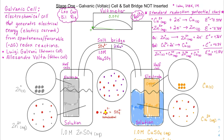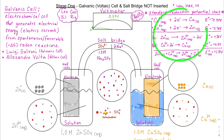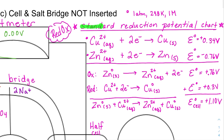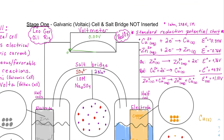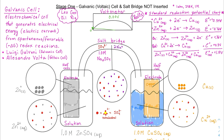In my first video on galvanic cells, I went over what a galvanic cell is and what the key components are. Using zinc and copper as half cells, I looked at the standard reduction potential chart to determine which reduction reaction would need to be reversed to an oxidation reaction to create a positive cell potential, and then wrote the overall reaction. After that, I modeled a particulate-level image of what this looks like before the salt bridge has been added.